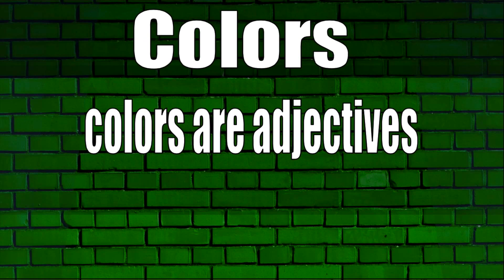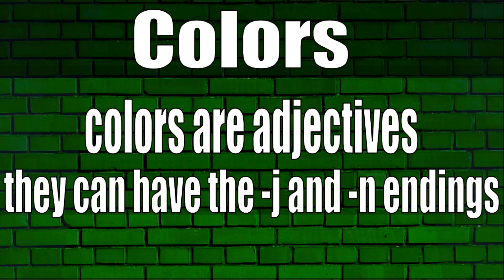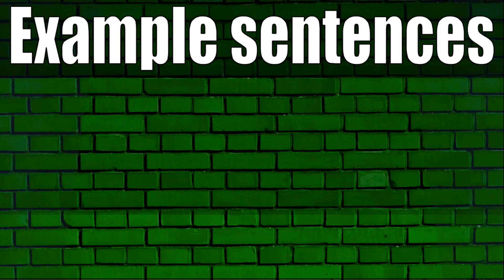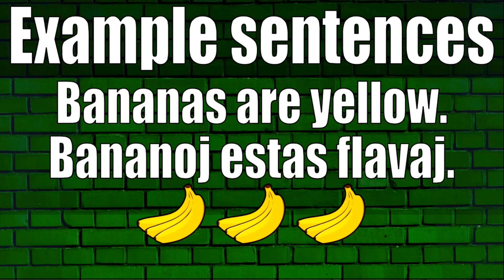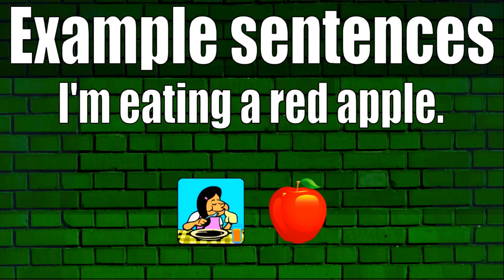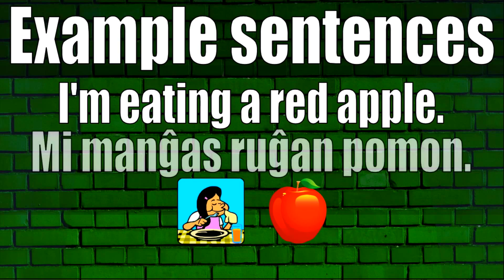Notice that colors have the ending '-a,' so they are adjectives. This means they can take the 'j' and 'n' endings. One example sentence: 'Bananas are yellow' — Bananoj estas flavaj. Another: 'I'm eating a red apple' — Mi manĝas ruĝan pomon.